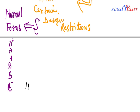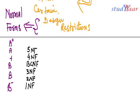We have normal forms like first normal form, second normal form, third normal form, then we have something called BCNF, then fourth normal form, fifth normal form, and so on. And we have a hierarchy over here.